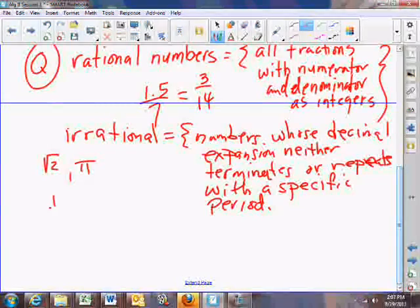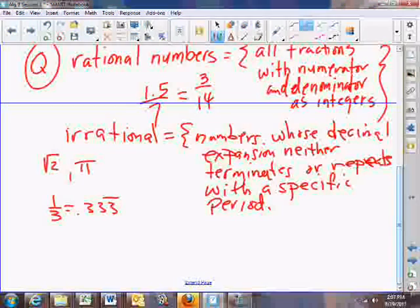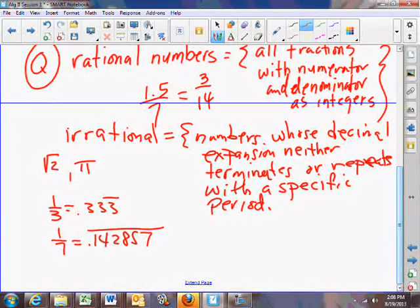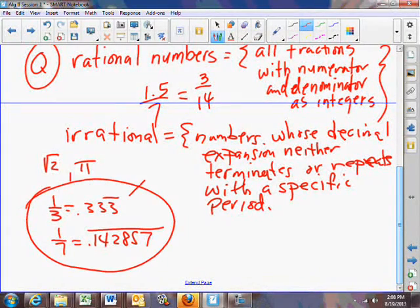Numbers like 1 third, which is 0.333 with the 3s repeating, are not irrational because this one repeats with a specific period. In other words, every one digit, this digit repeats. 1 seventh is rational, it's not irrational. And 1 seventh's decimal is 0.142857, 1 4 2 8 5 7. In other words, 1 4 2 8 5 7 repeats over and over and over again ad infinitum ad nauseum.